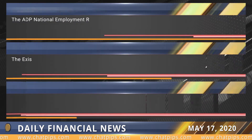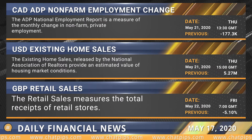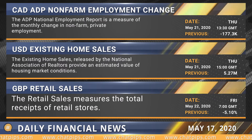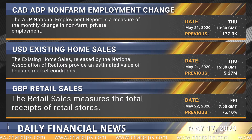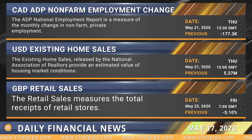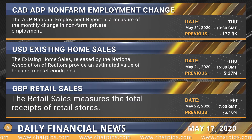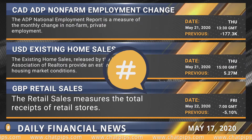The Canadian ADP non-farm employment change Thursday at 1330 GMT, the US existing home sales Thursday at 1500 GMT, and the UK retail sales Friday at 700 GMT.